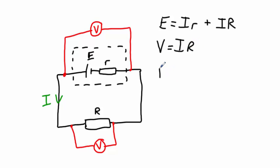Let's plug that into our earlier equation, so we're left with E equals I multiplied by little r, the internal resistance, plus V.